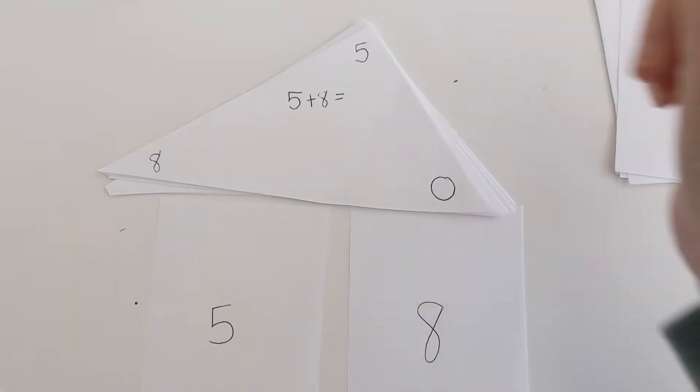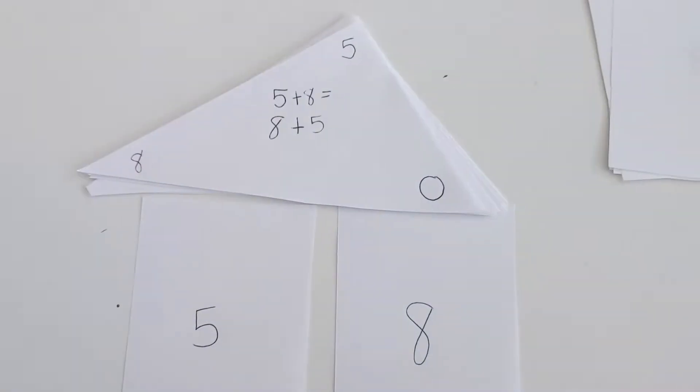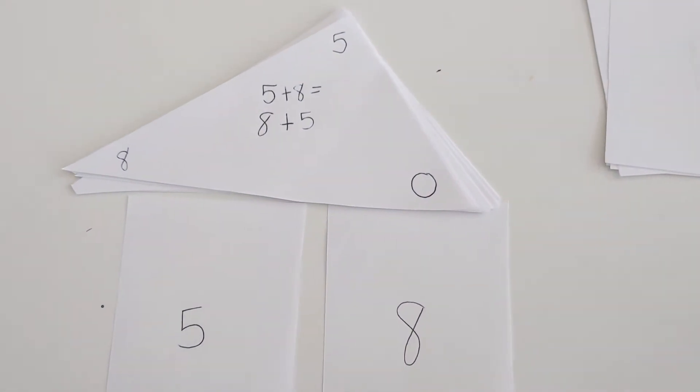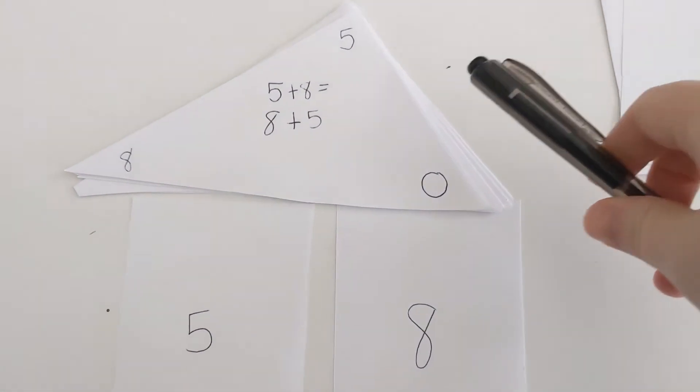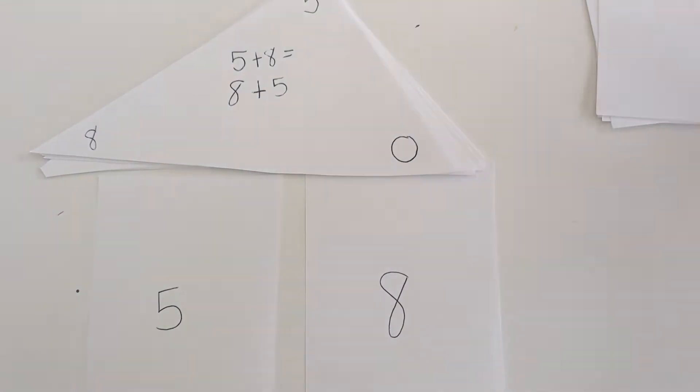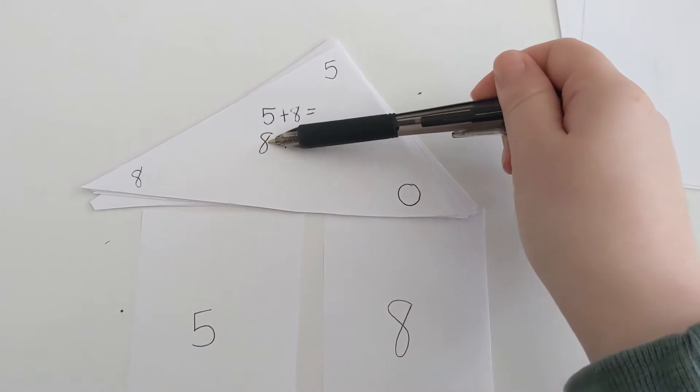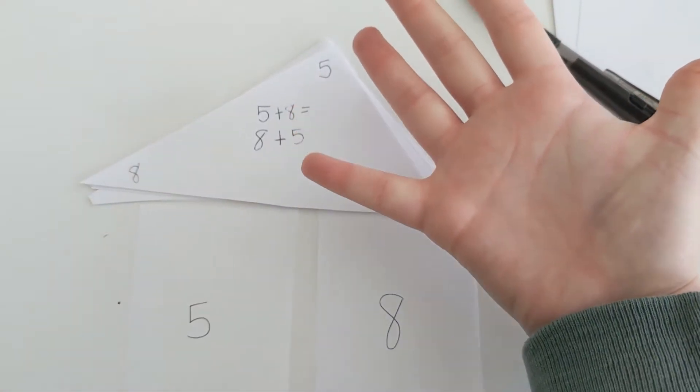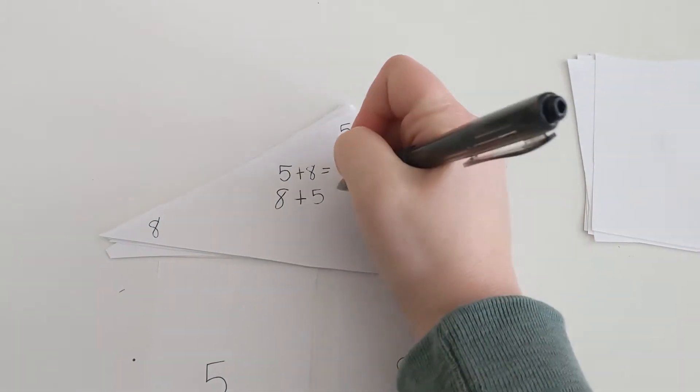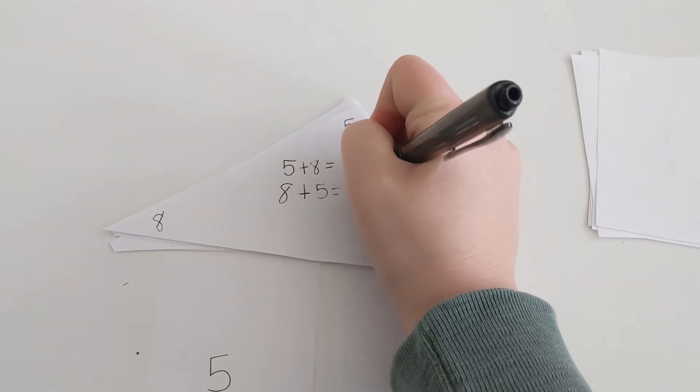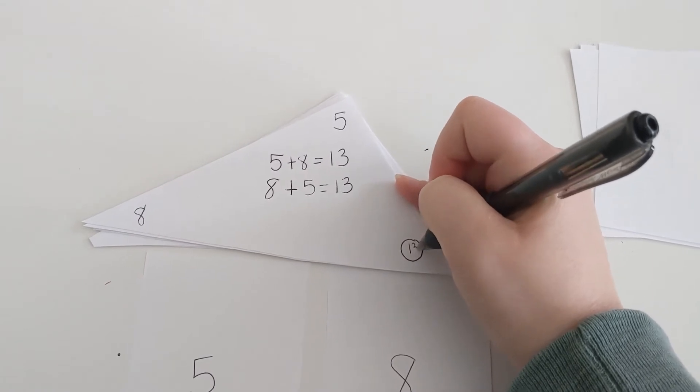So I have my five plus eight, but I can also do eight plus five. Now this is where I suggest if you have any kind of manipulative beads, Cheerios, whatever you have, you can use them. You can even use your fingers to count. So we always like to put our bigger number in our head. So eight goes in our head and then I have to add five more. So eight's in my head, nine, ten, eleven, twelve, thirteen. My answer for both of these is thirteen, which means the answer missing from my corner over here is thirteen.